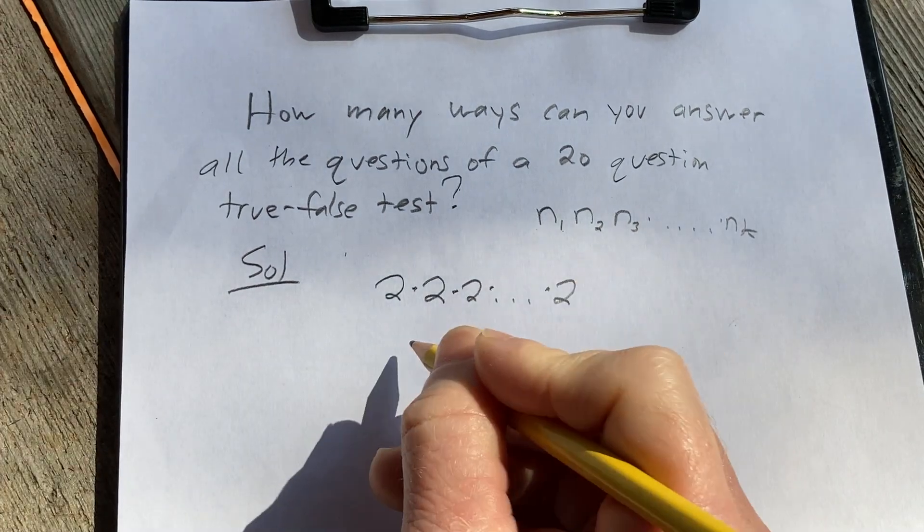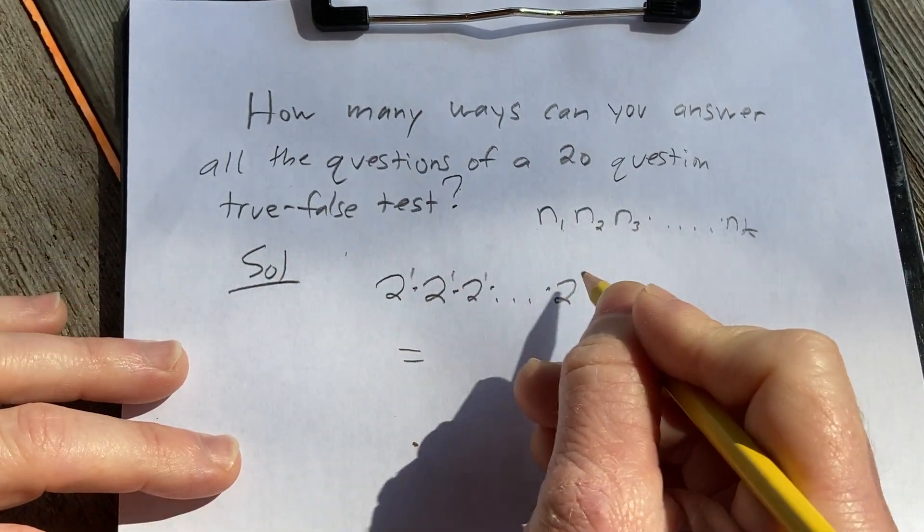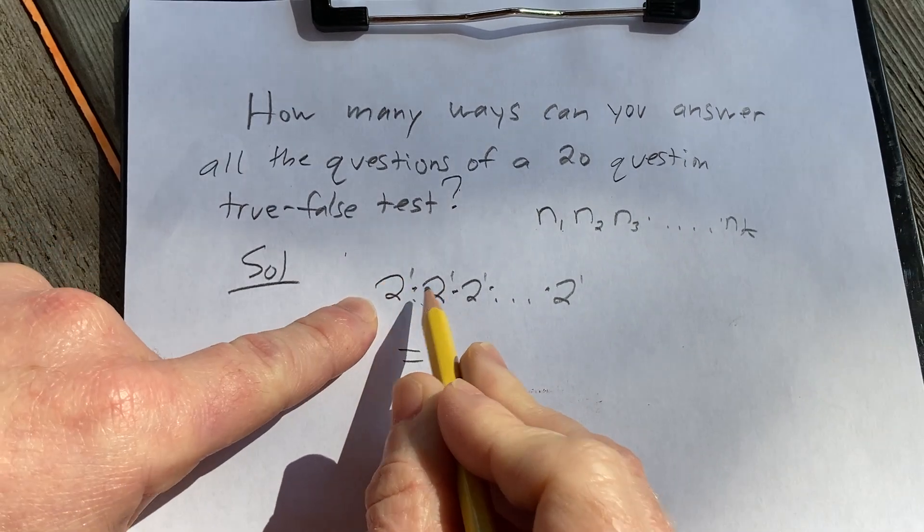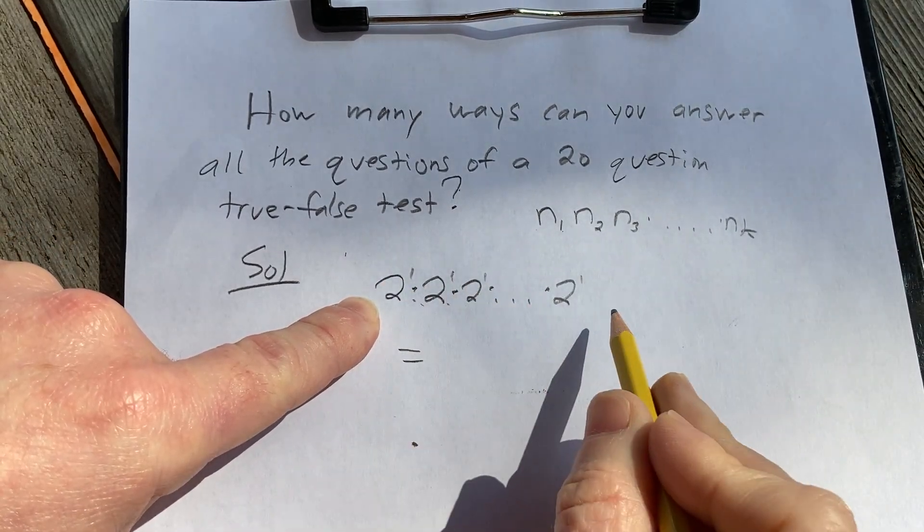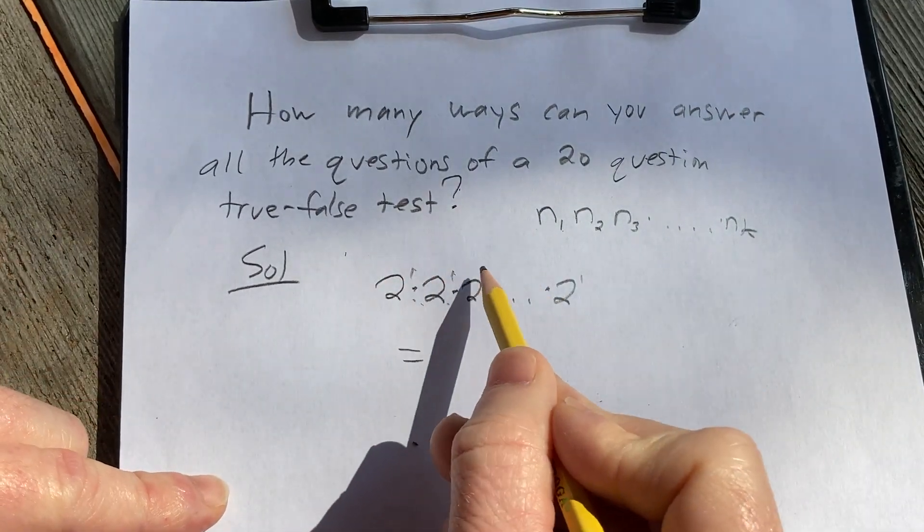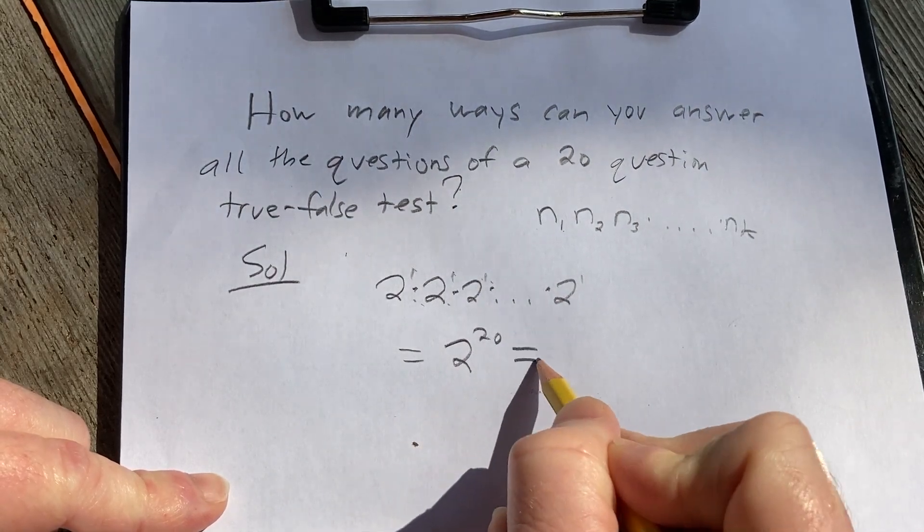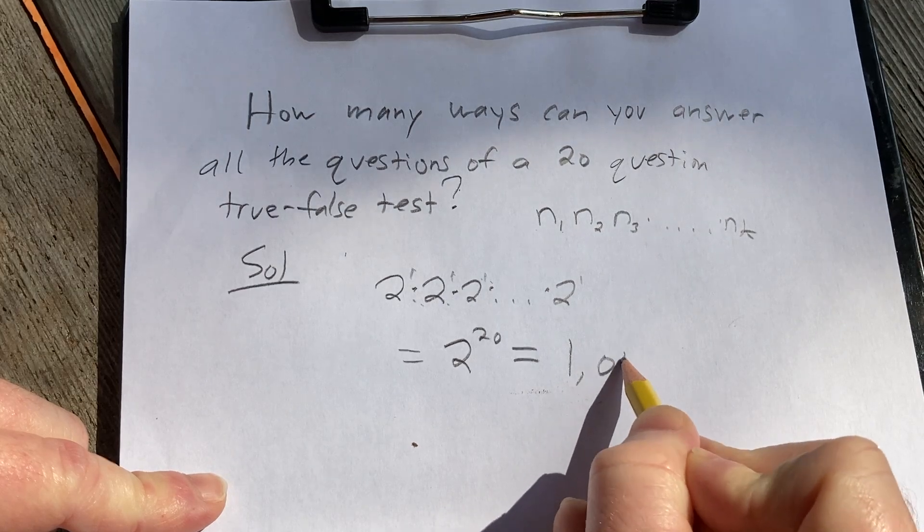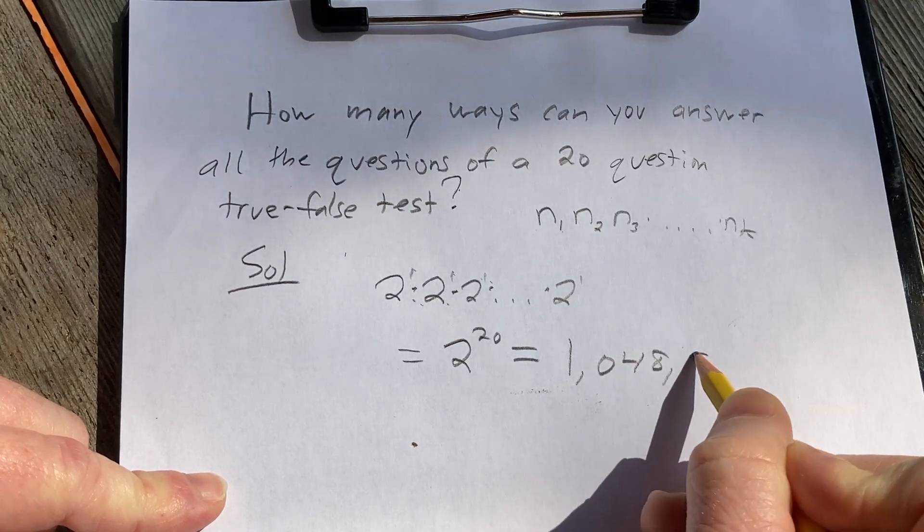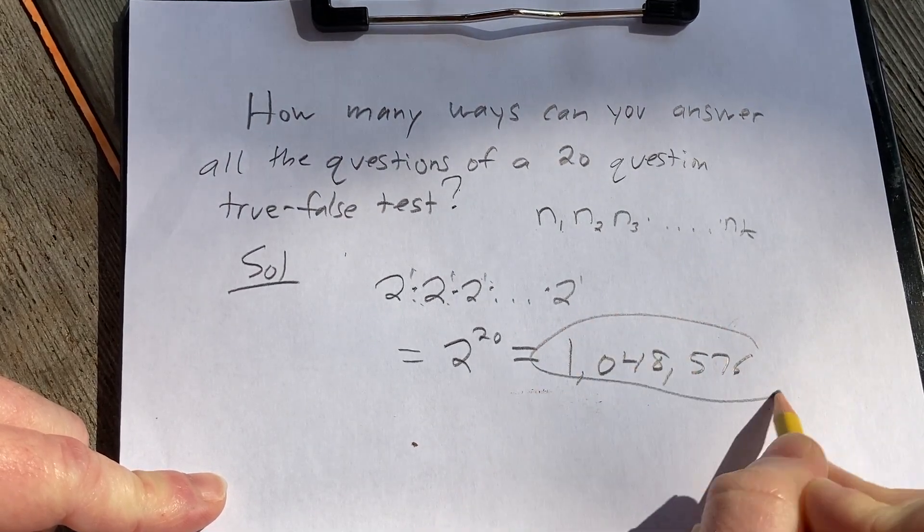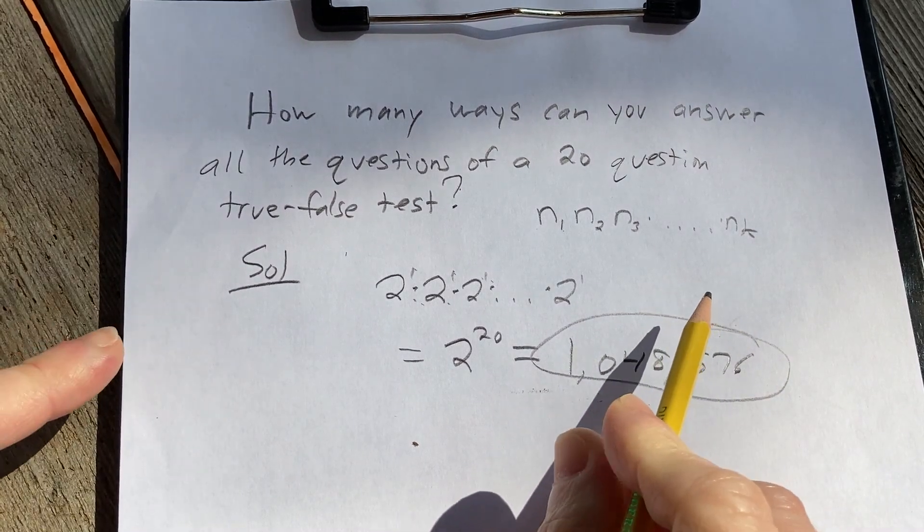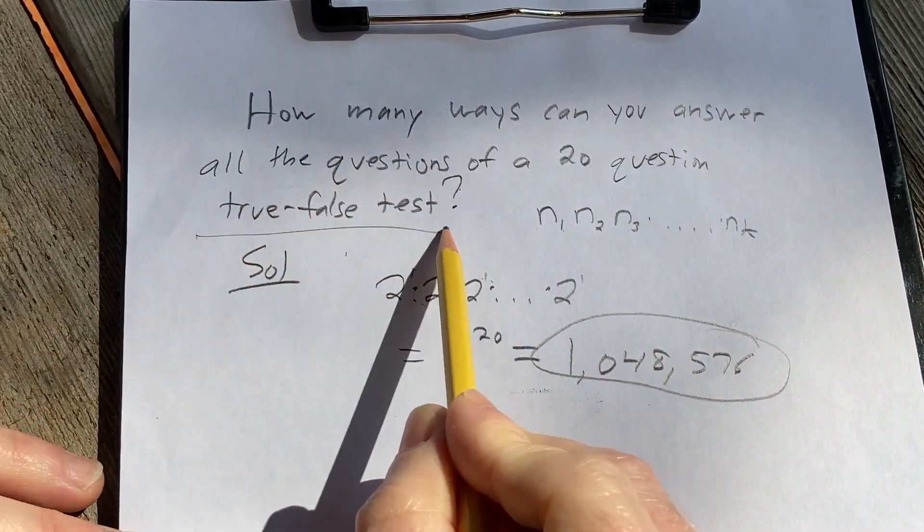So this is just going to be, well there's 20 questions, and basically you have an exponent of 1 here. So you have 2, 2, 2, and you have 20 copies of the two. So you do 1 plus 1 plus 1 plus 1 20 times, so you get 2 to the 20th, which is equal to 1,048,576 ways. That's how many ways you can answer all of the questions of a 20 question true-false test.